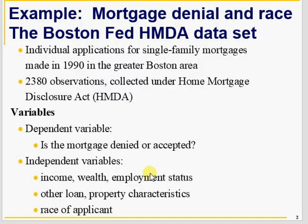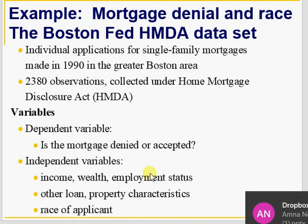Here we are going to explore Home Mortgage Disclosure Act data. This is a very commonly used dataset in many econometric books — the question being whether loan denial or approval is a function of race, and whether race is a determinant of loan denial or approval. If you just look at aggregate numbers, 27% of Black people were denied a loan and about 9% of White people were denied a loan in this data. So should we consider that there is racial discrimination, because the difference between 27% and 9% is very large? There can be many other factors for which we need to work out.